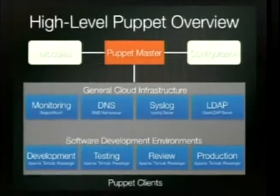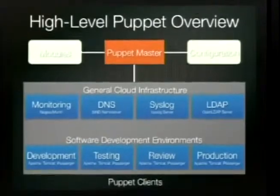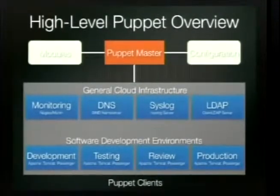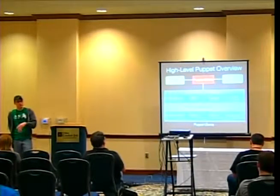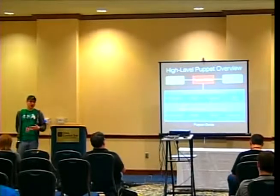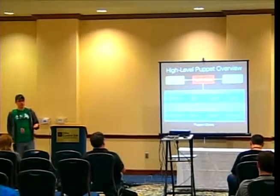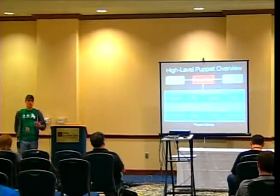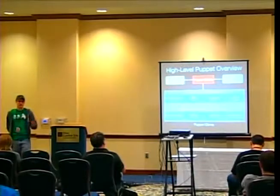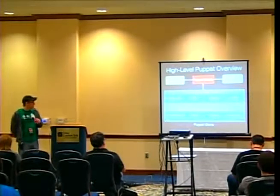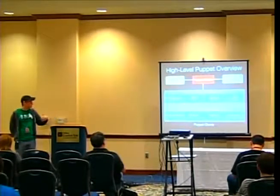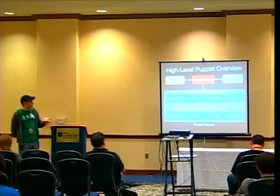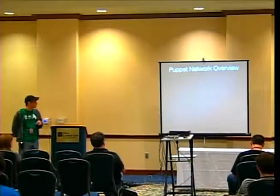The Puppet master knows about all of these things — it knows what packages should be there, what files should be there, what the file configuration looks like line by line. The problem in a normal infrastructure is that someone makes a one-off change, forgets to tell you, and suddenly you don't have consistency in your environment anymore. That's a huge problem because it takes more legwork to find what changed than it does to actually fix it.